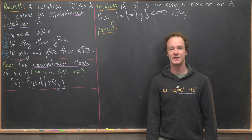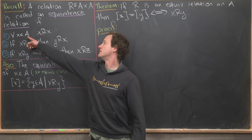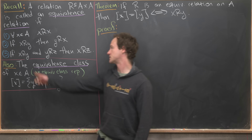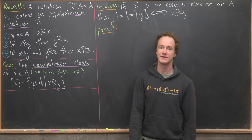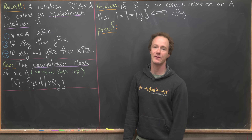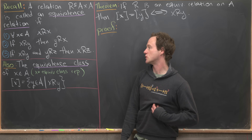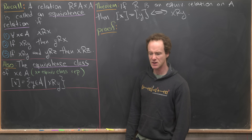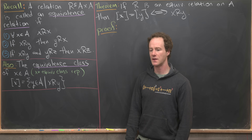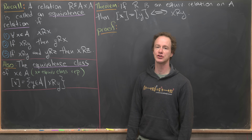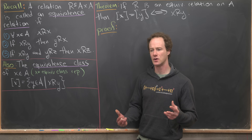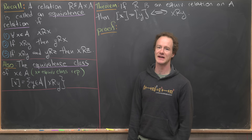The first property is reflexivity: all values X in A are related to themselves. The next is symmetry: if X is related to Y, then Y is related to X. And finally, transitivity: if X is related to Y and Y is related to Z, then X is related to Z. We want to think of equivalence relations as an abstraction of equality, allowing things to be related that aren't necessarily equal.